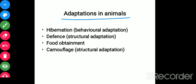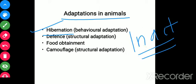Now let's see adaptations in animals — including hibernation, defense, food obtainment, and camouflage. Hibernation is an example of behavioral adaptation. In simple terms, it is a state of inactivity — no process actively runs. During hibernation, animals lower their body temperature, heart rate, and breathing slow down. It is a dormant stage that certain animals spend during winter. An example is the polar bear.